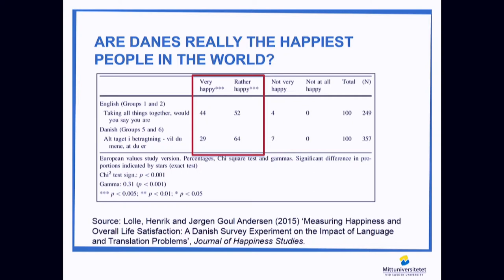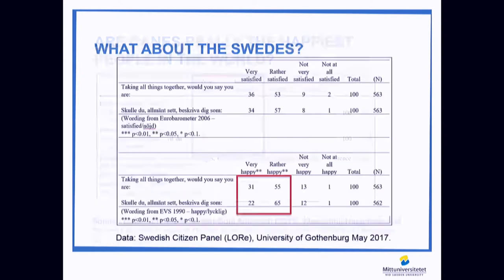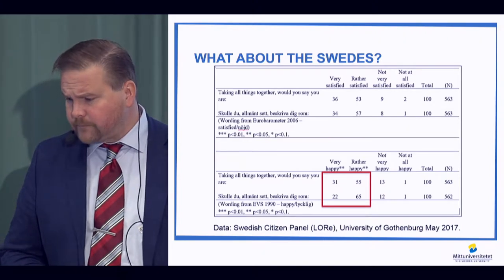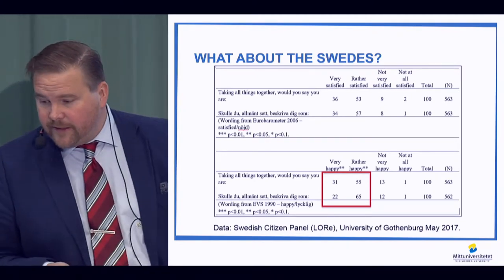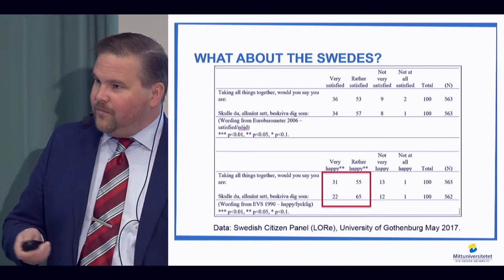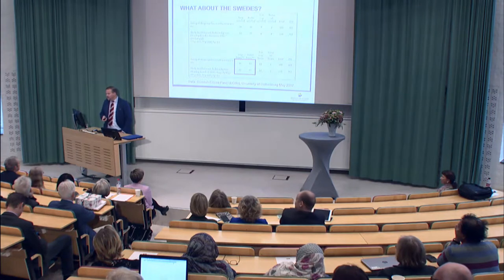But only 29% are very happy if they receive the translated question. I replicated this in Sweden, running experiments at the Laboratory of Opinion Research at the University of Gothenburg. When 'satisfied' is translated into 'nöjd' as it is in Sweden, I find no differences at all between the languages. But I could find the very same numbers for happiness, which in Swedish is also translated as 'lycklig.' It's easier to be happy in English, both in Swedish and Danish.